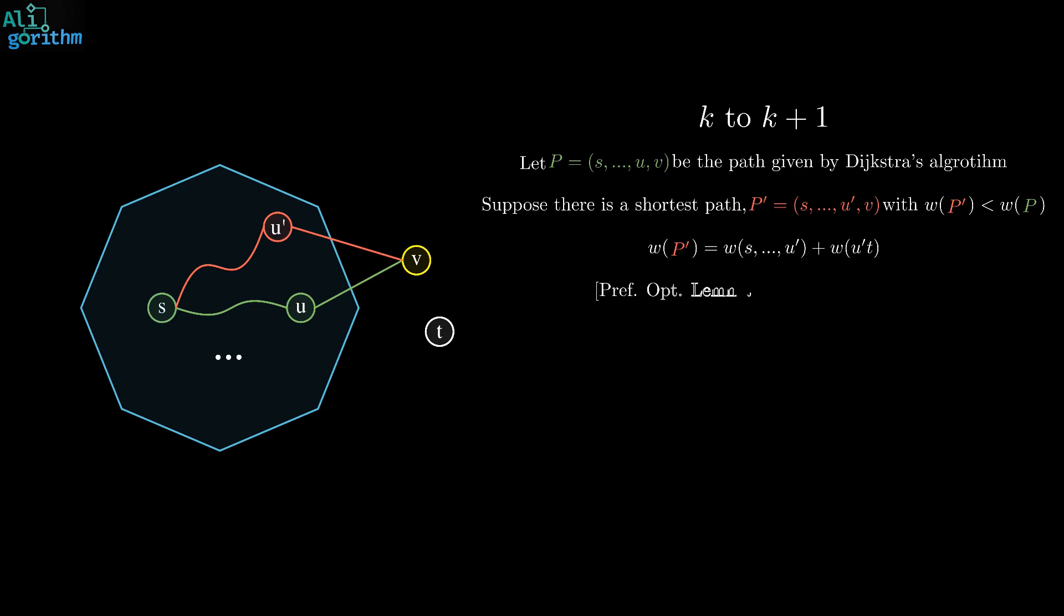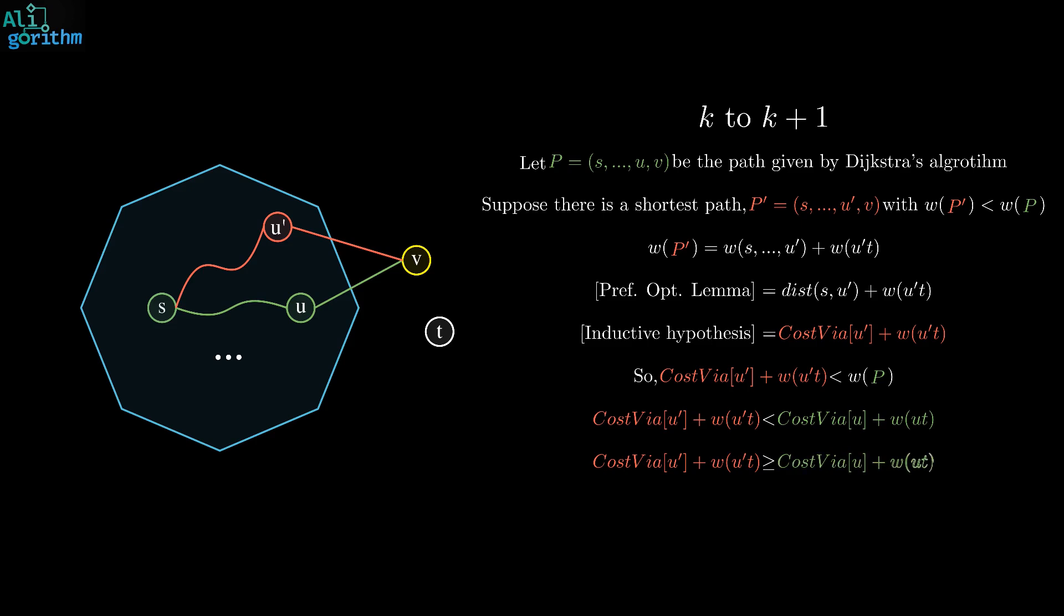By the prefix path optimality that we just proved, the weight of the path from S to U' is the shortest path distance from S to U', which is equal to the cost via of U', based on the inductive hypothesis. Thus, cost via of U' plus W of U'V is less than the weight of P, is strictly less than the weight of P. However, the algorithm has relaxed the incoming arcs to V, and deduced that cost via of U' plus W of U' is the smallest one. This leads to a contradiction.